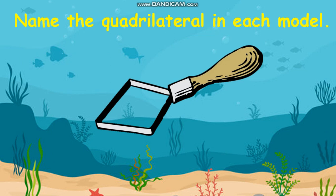Let's have an exercise about quadrilaterals. What you are going to do is to name the quadrilateral in each model. Look for the blinking line to identify the figure.